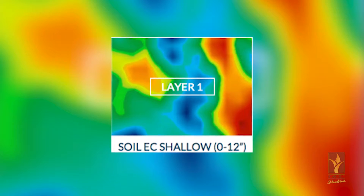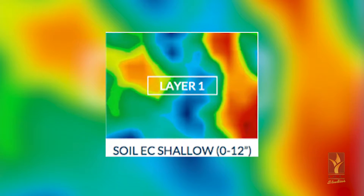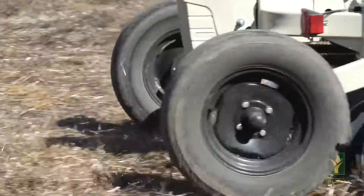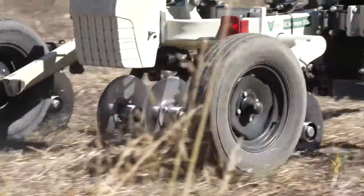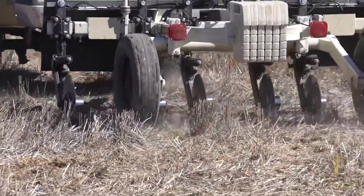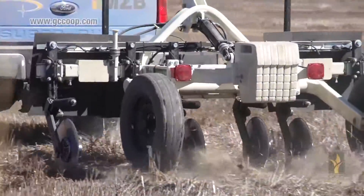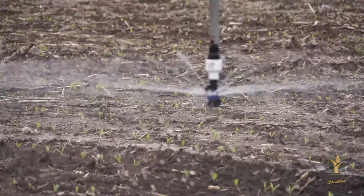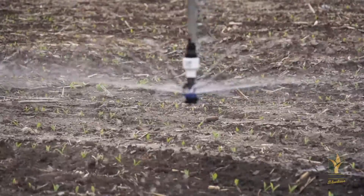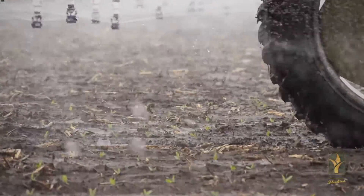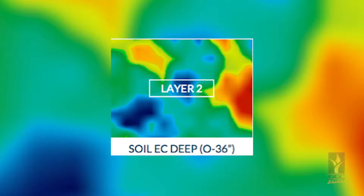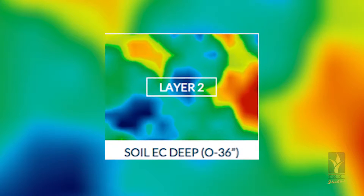The first layer of this multi-layer approach is the soil EC shallow map. To accomplish this, we use our Veris cart and send an electrical current from 0 to 12 inches deep to find the different trends in soil properties, which include water holding capacity, soil depth, or soil cation exchange capacity.